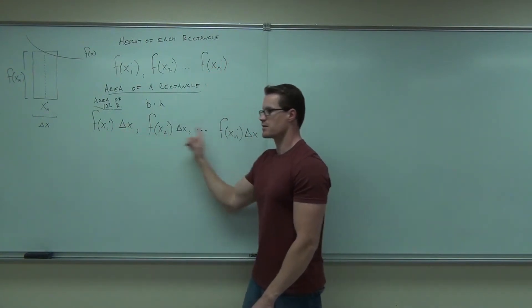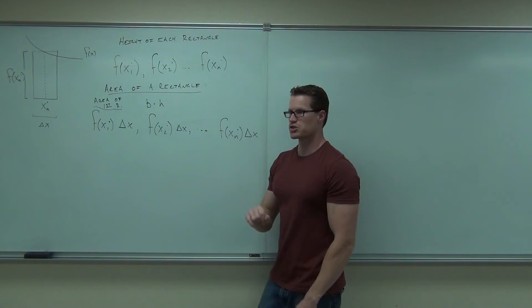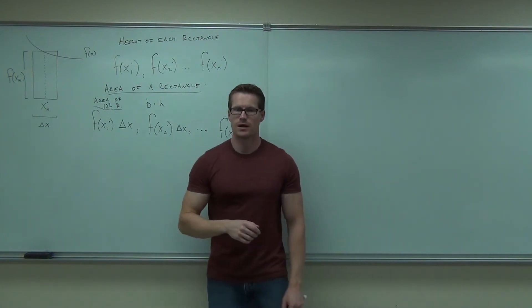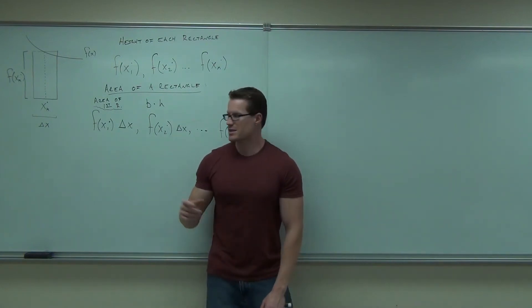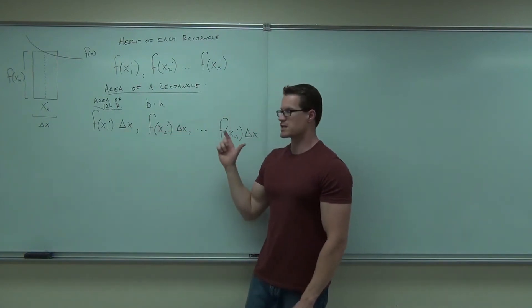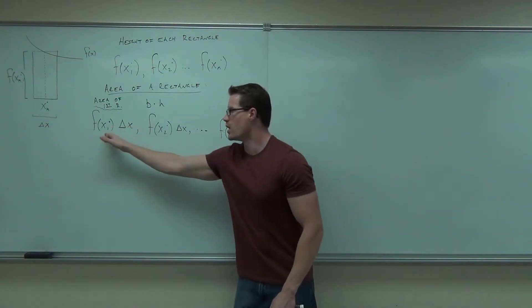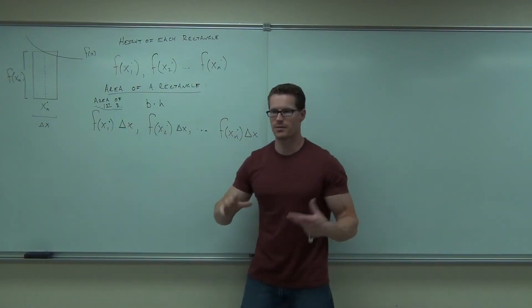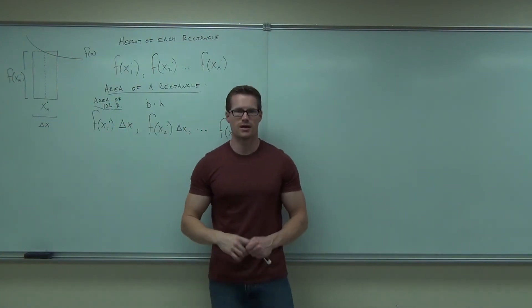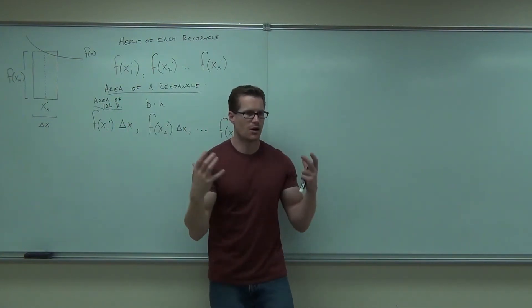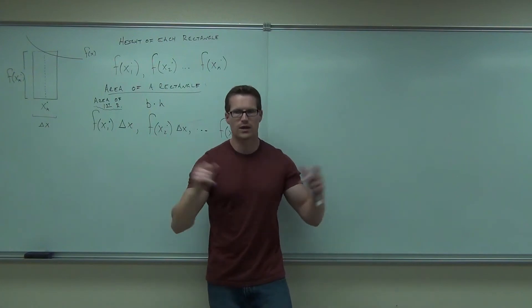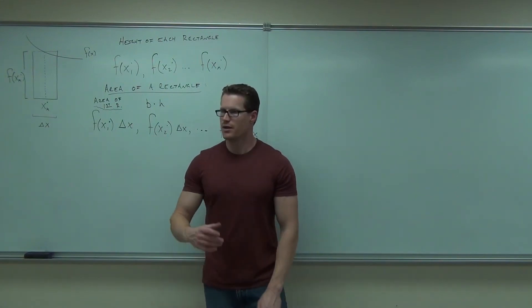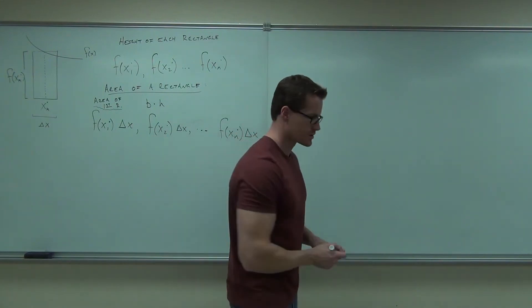Base times height, base times height, base times height for each individual rectangle. Since this is the area of each individual rectangle from one through n, and that encompasses all of them, how do you find the area of the whole thing?